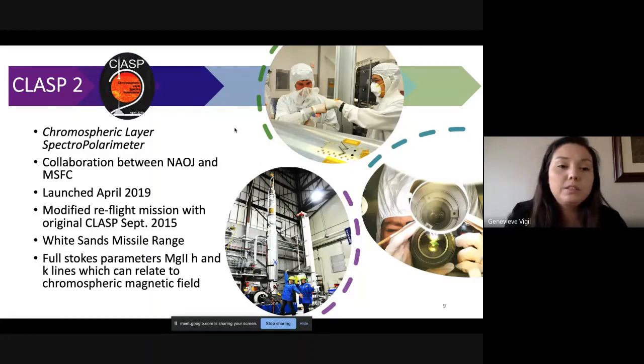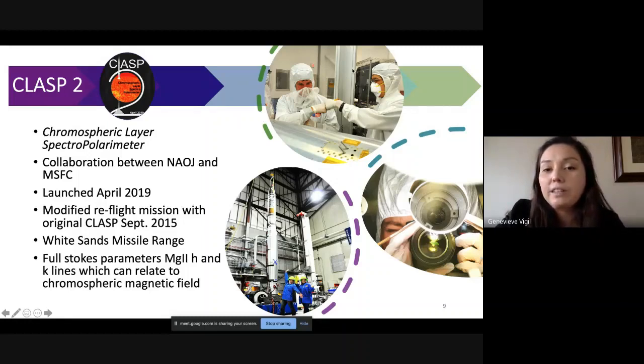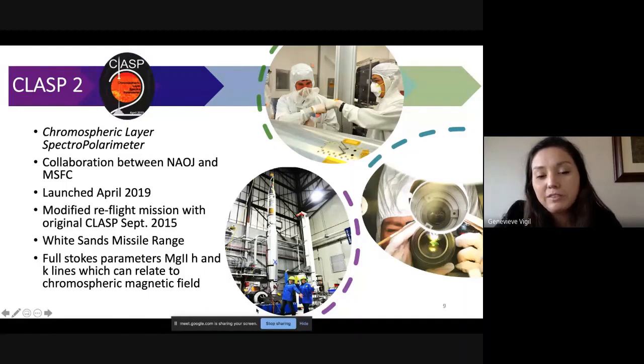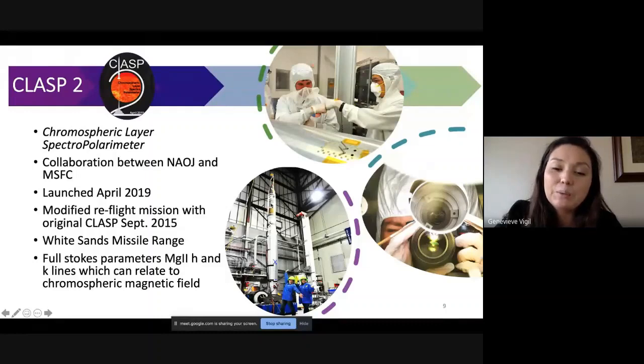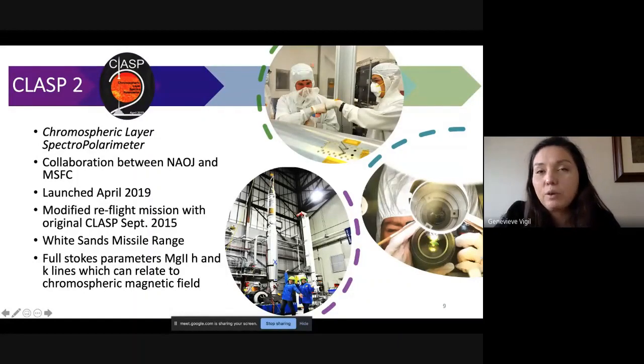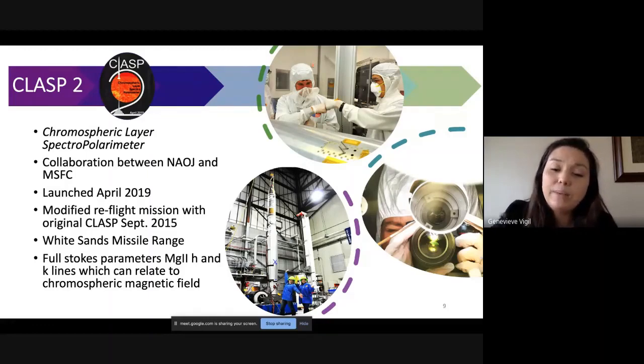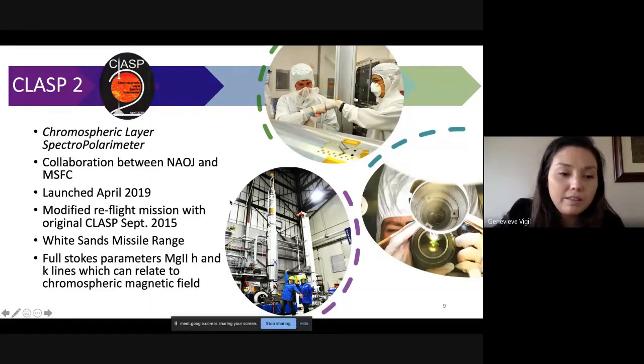From there I will move on to the CLASP2 instrument which was launched in April of 2019. This is the chromospheric layer spectropolarimeter. This again was a reflight of a modified CLASP1 which was originally launched in 2015. This is a collaboration between the National Astronomical Observatory of Japan and Marshall Space Flight Center. Here you can see some of our J side collaborators and our engineering team just getting it done during the month that we spend at White Sands before launch. Here is a good picture of one of the more scary tests that we do on these payloads. This is the whole payload integrated together mounted on top of a shaker table so that we can perform a vibe test to make sure that it is going to withstand the loads of launch.